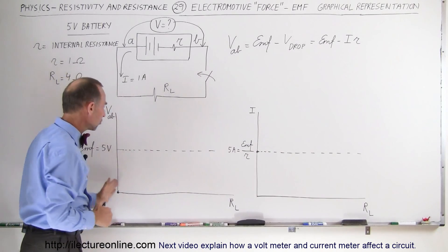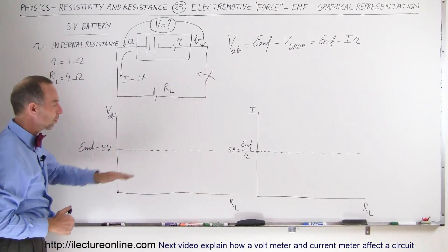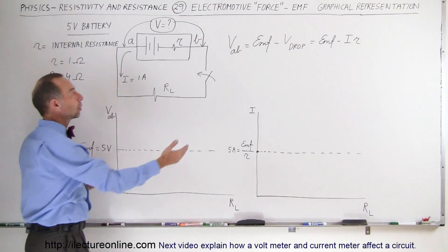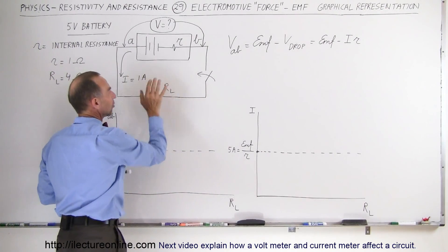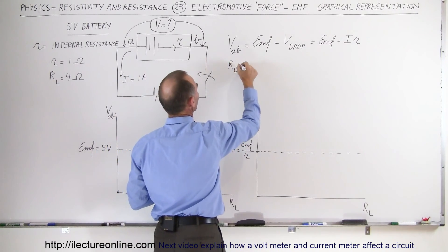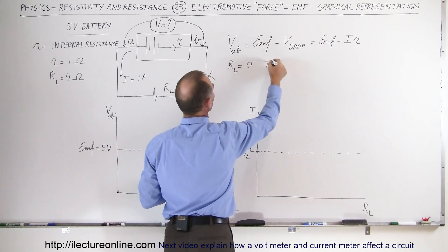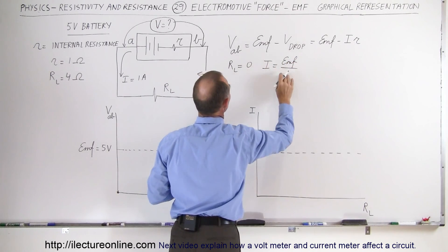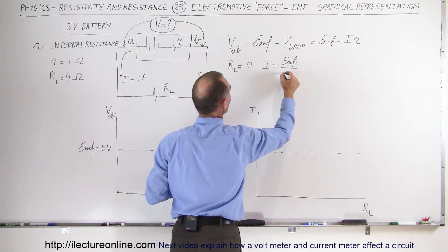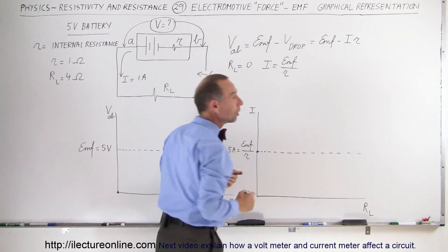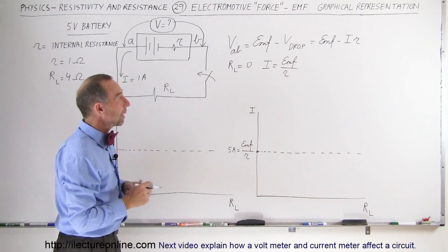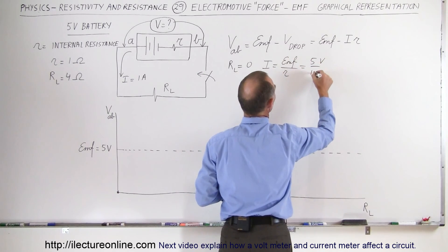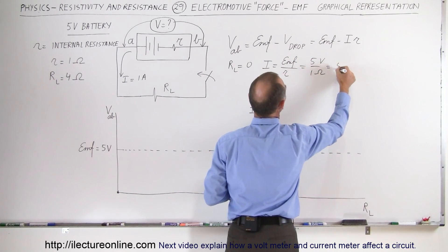Now we're going to graph the relationship between the load resistor and the voltage between A and B. When we close the circuit with no load resistor — R_L equals zero — the current in the circuit will simply be equal to the EMF divided by the total resistance, which in this case is only the internal resistance of the battery. That would be 5 volts divided by 1 ohm.